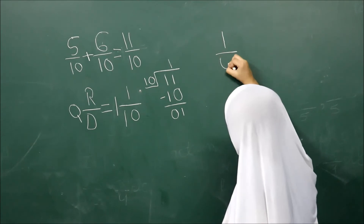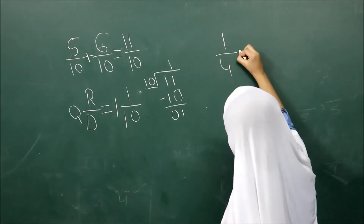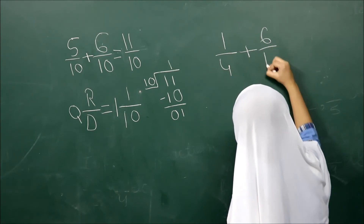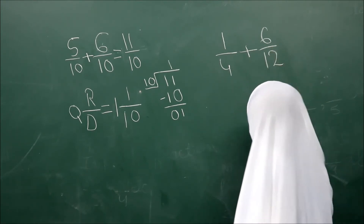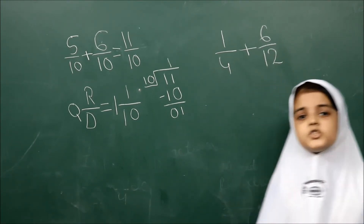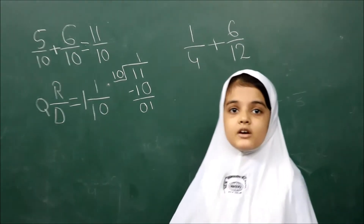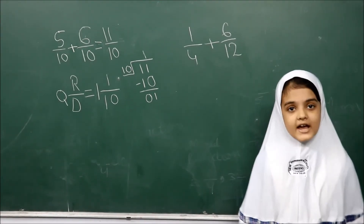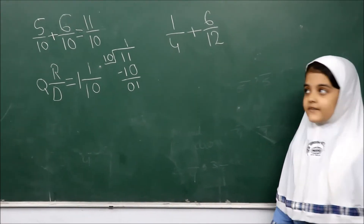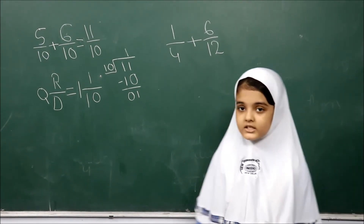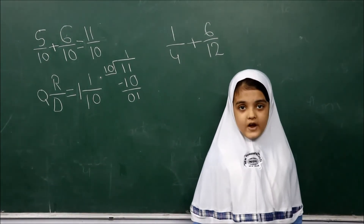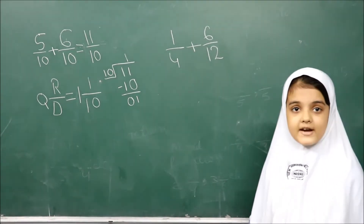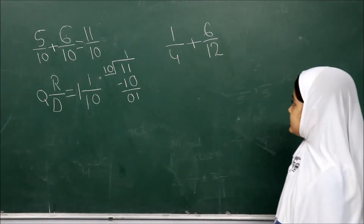Now let's take one more example: 1 by 4 plus 6 by 12. Did you know which type of fraction I have taken? Yes, you are right — these are unlike fractions, so we need to convert them to like fractions. To convert to like fractions, we have to find the LCM of the denominators.